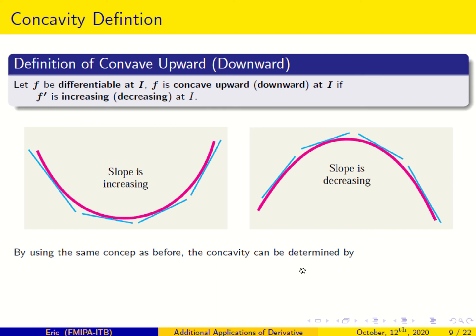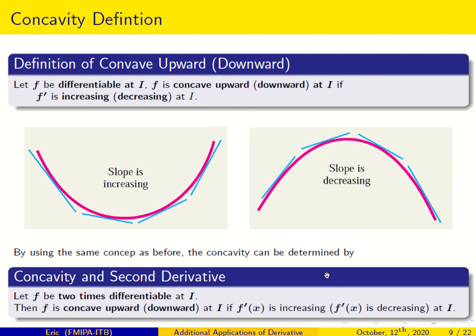This is the relation between concavity and the second derivative. Let f be two times differentiable at i. Then f is concave upward at i if f'' is greater than 0. Similarly, f is concave downward at interval i if f''(x) is less than 0 at i. Let's try with an example.